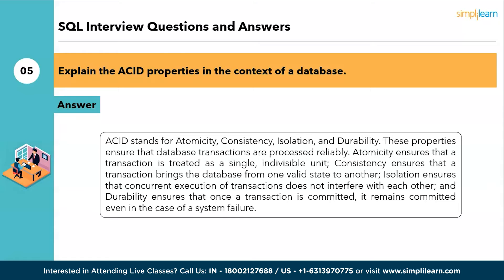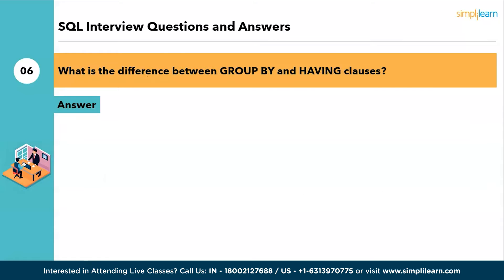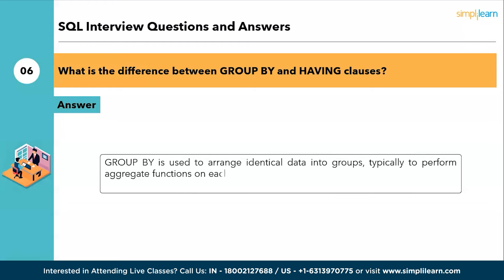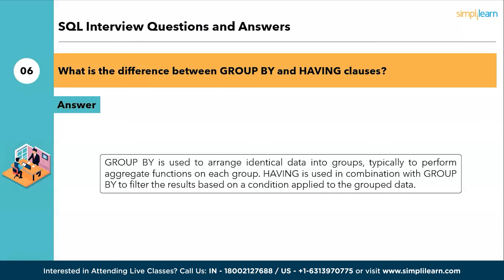The sixth question: what is the difference between GROUP BY and HAVING clauses? GROUP BY is used to arrange identical data into groups, typically to perform aggregation functions on each group. HAVING is used in combination with GROUP BY to filter the results based on a condition applied to grouped data.